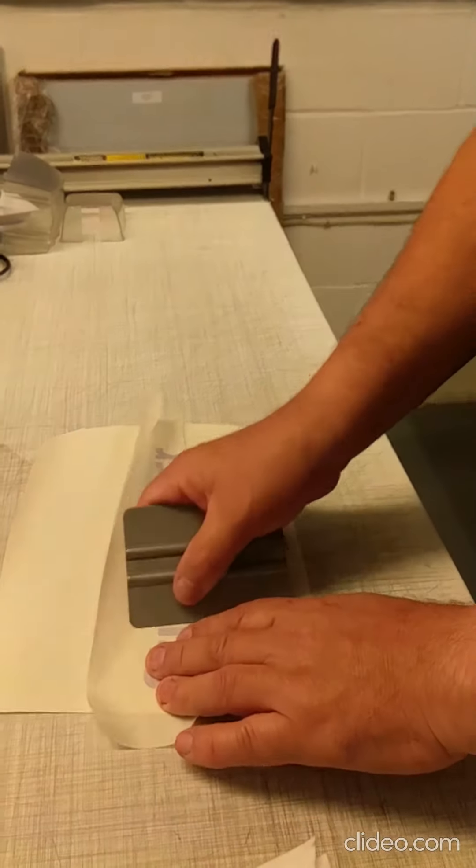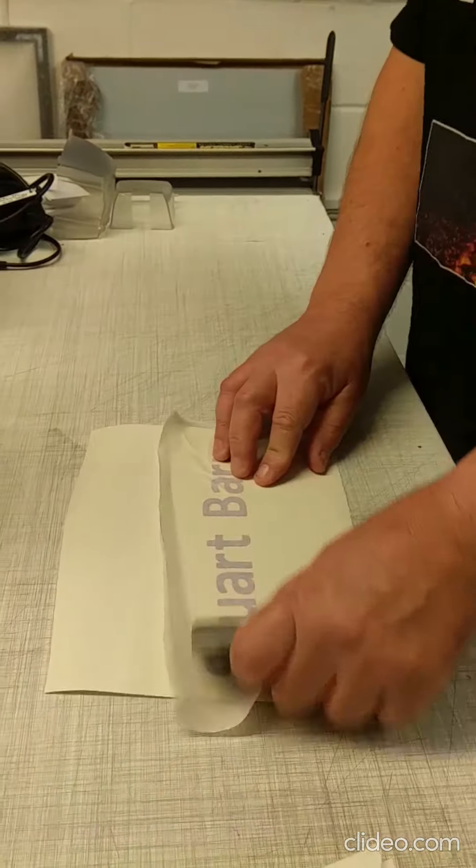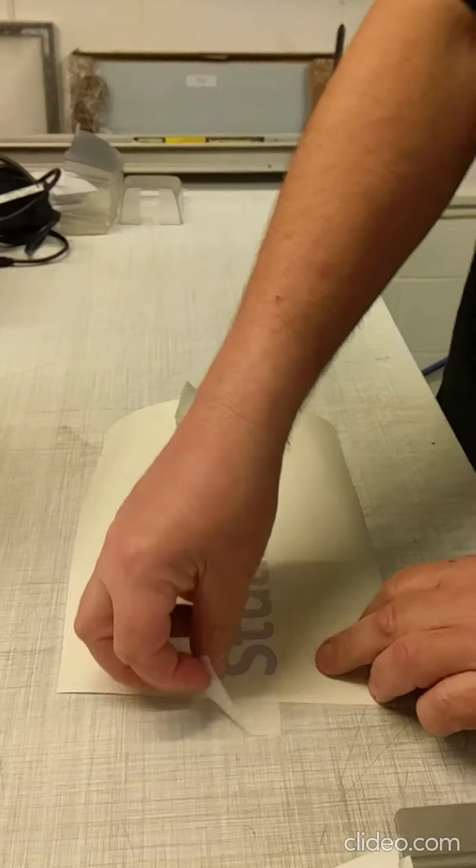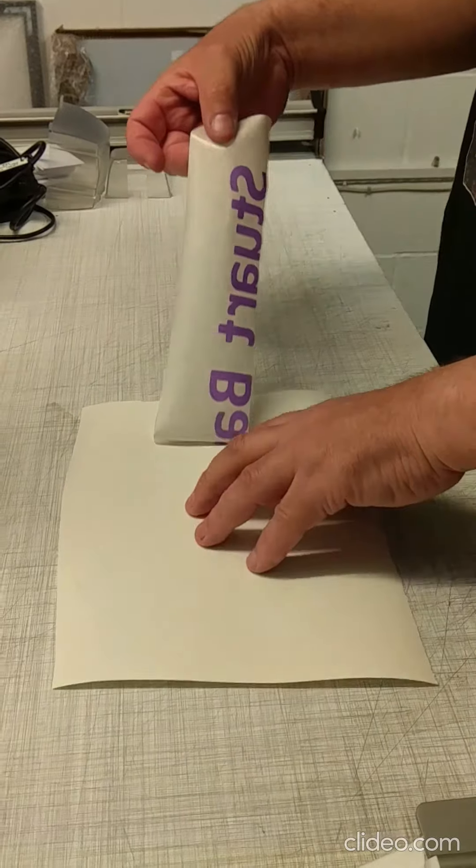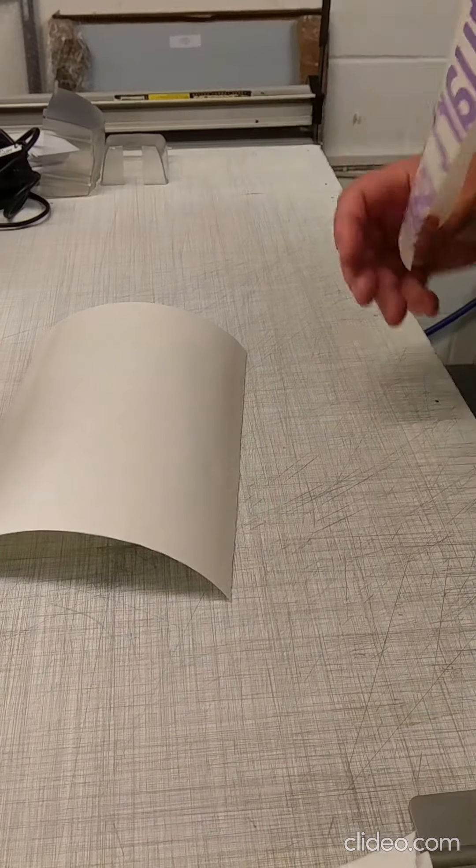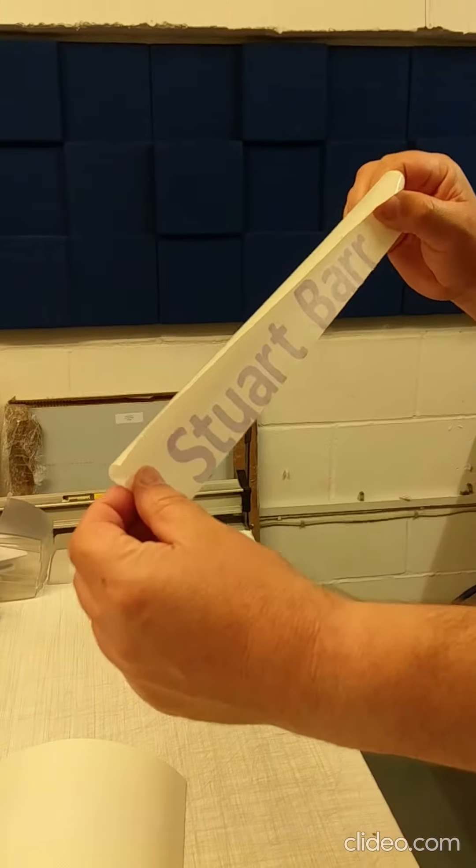We need to press down very hard on the tape. Then the tape pulls the lettering off. The lettering is now free for us to stick onto the board, the vehicle, whatever it's going on to.